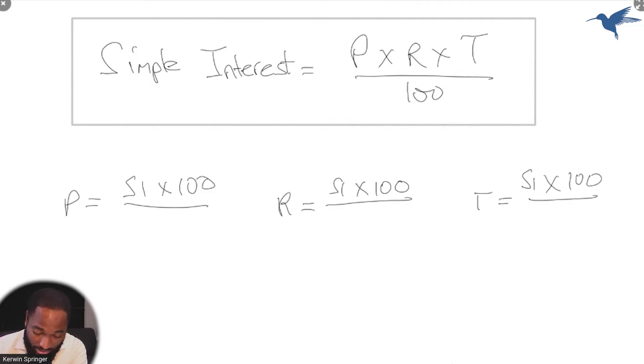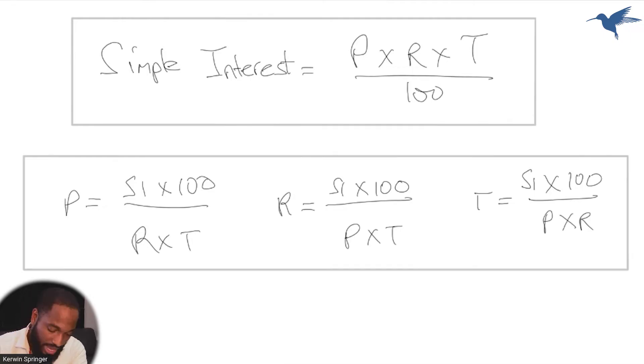And we can get formula for time, simple interest times 100 divided by something. So you're dividing by the other two variables, rate and time. Since we had a rate here, the other two get a chance to shine. So in this case, we're looking for P × R.